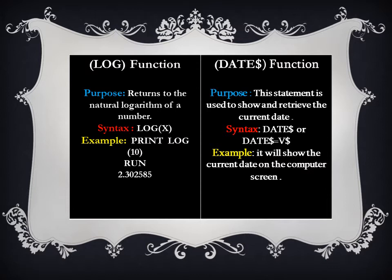Next, the date$ function — this shows the current date. It has two syntaxes: simply date$, and date$ = v$. When we apply date$ alone, it shows the current date on the output screen. When we use date$ = v$, it gives us the option to set a date of our own choice. A question arises: why does 'string' appear with 'date' in a numeric function? This is because the commas that appear within the date are special characters, and special characters fall under string values. That was the discussion of numeric functions.